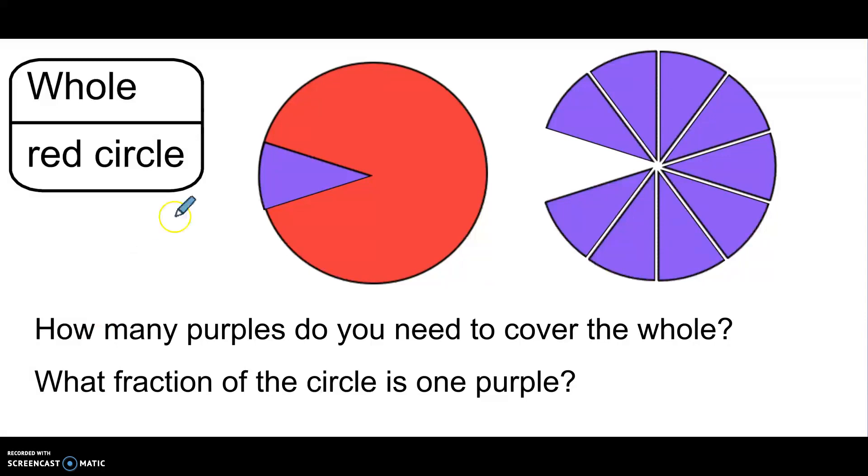Okay, now my one whole is going to be a red circle. So here I have purple fraction pieces. How many purple fraction pieces would I need to cover my whole? I would need 10. So what fraction of my circle is one purple piece? This is one-tenth.